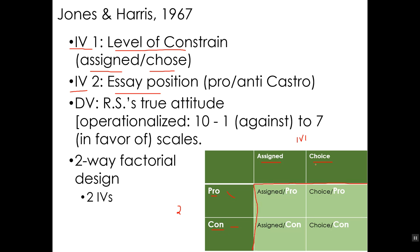The four conditions are: R.S. is assigned to write a pro essay; R.S. is given the choice and chooses to write a pro essay; R.S. is assigned to write an anti-Castro essay; and R.S. is given the choice and chooses to write against Castro. The dependent variable was R.S.'s true attitude, operationalized by the ten 1-to-7 scales that subjects filled out.